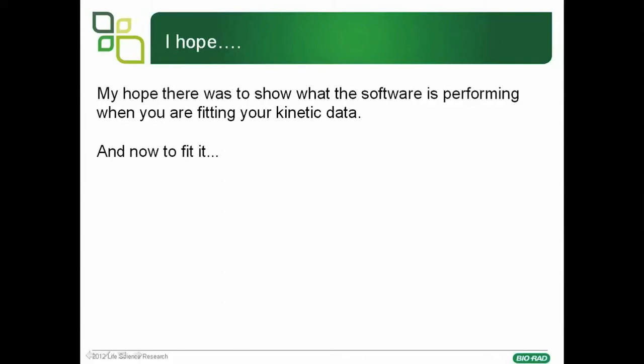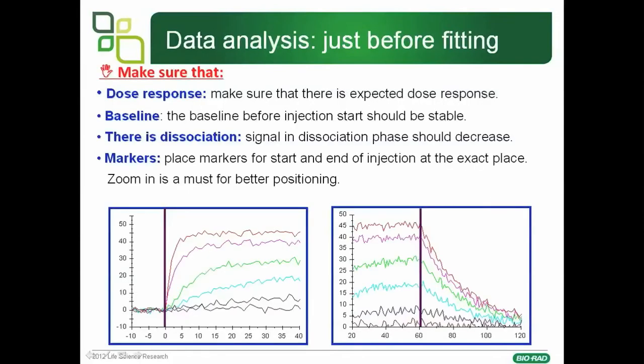Just before fitting, you need to make sure that there is a dose response — the highest concentration gives the highest response, and as concentration is reduced, the response is reduced. You need to make sure that the baseline is stable before the start of the injection, as in the left-hand example. You also need to make sure that there is dissociation. For systems where the dissociation rate constant is 10⁻⁴ or 10⁻⁵, this can take minutes or in some cases hours. Sometimes you need to zoom in on the data to correctly mark the start of the dissociation.